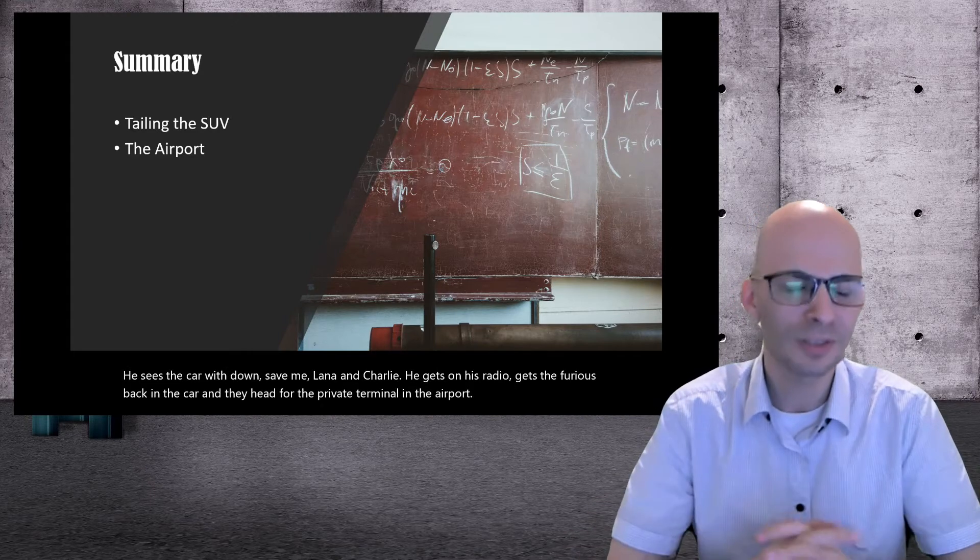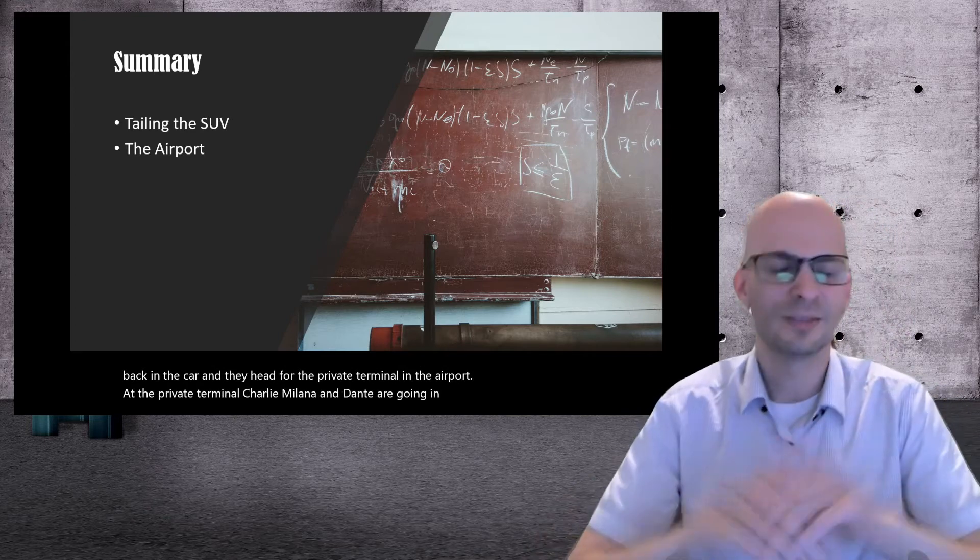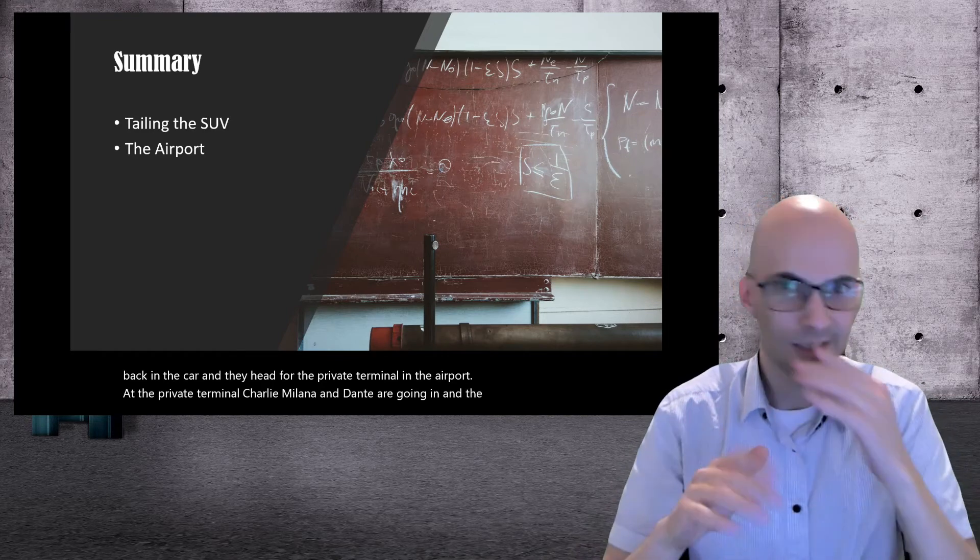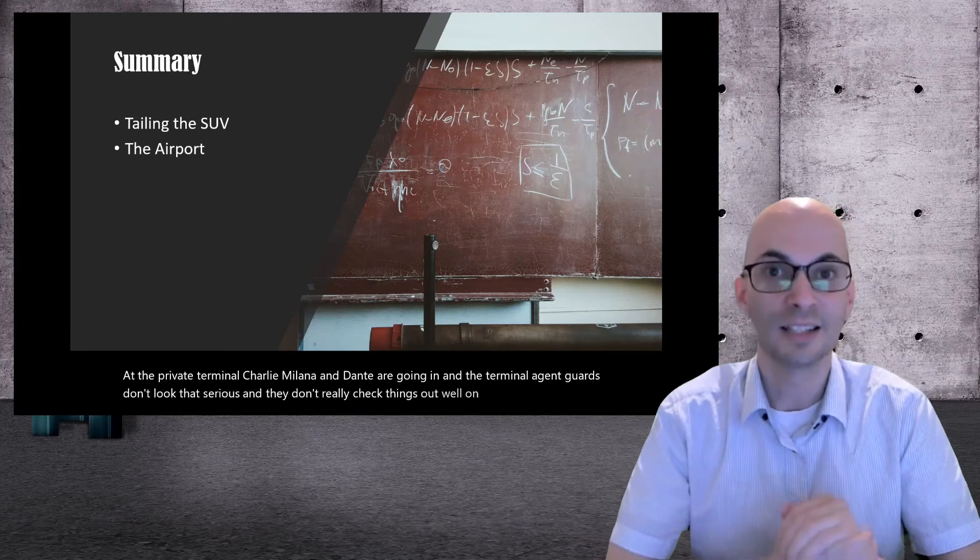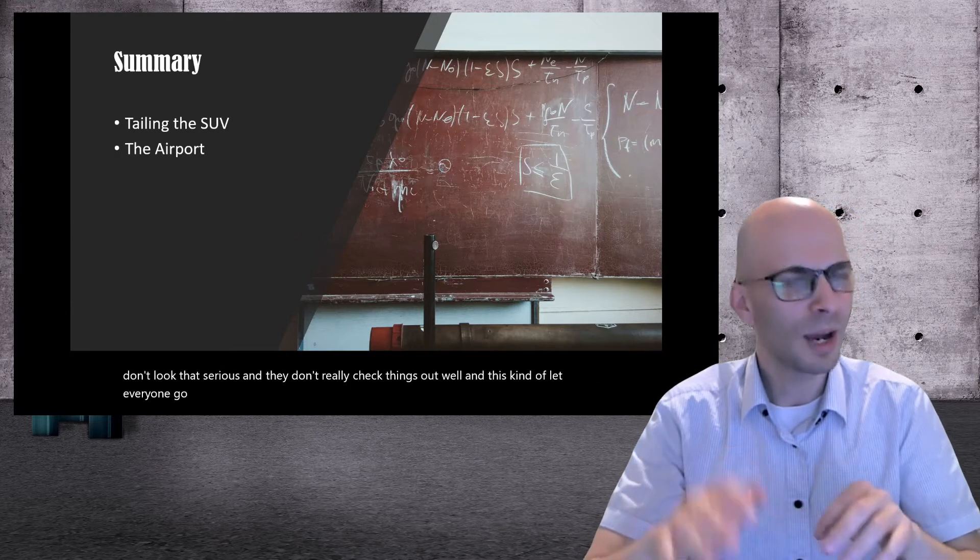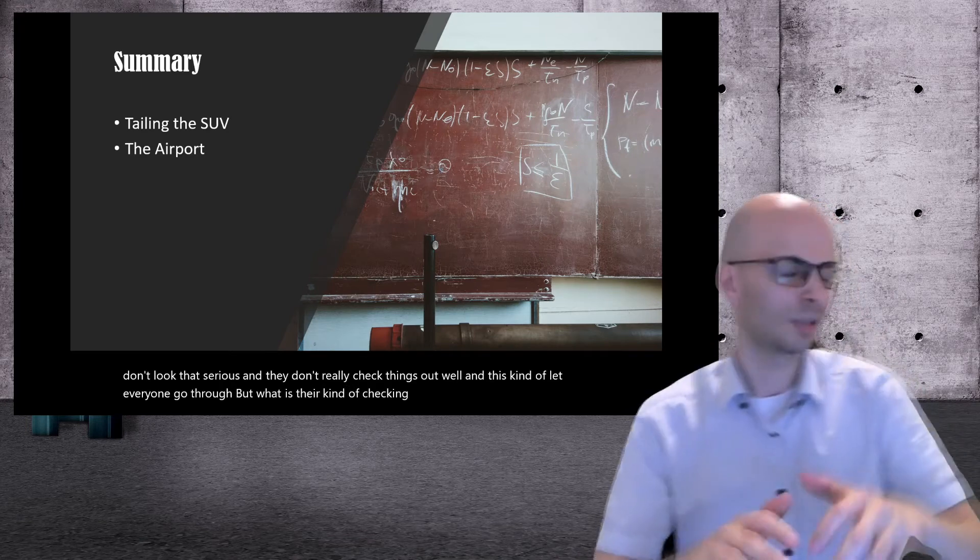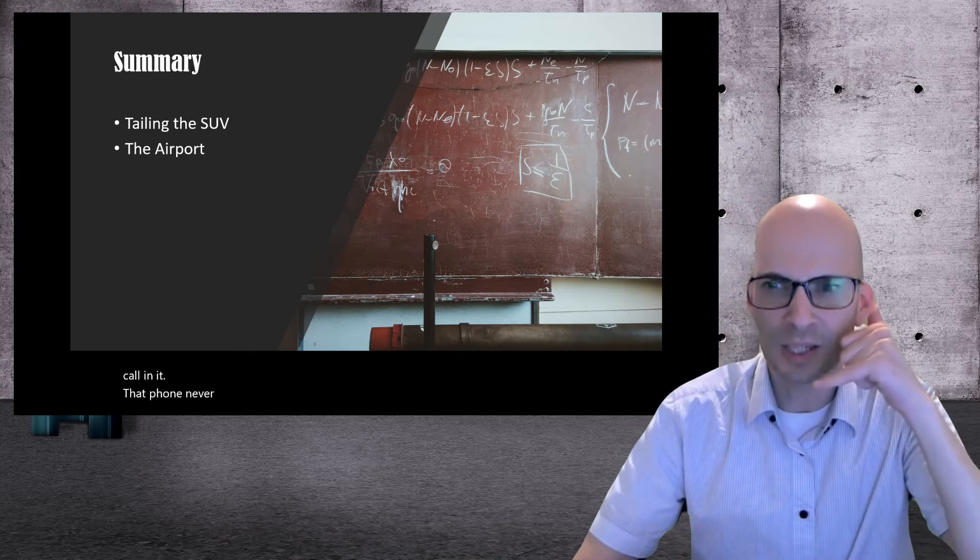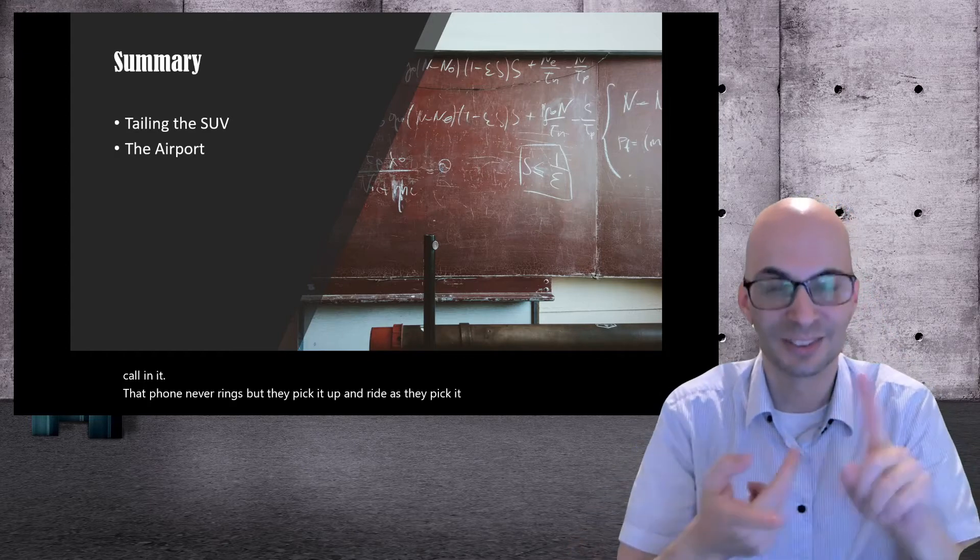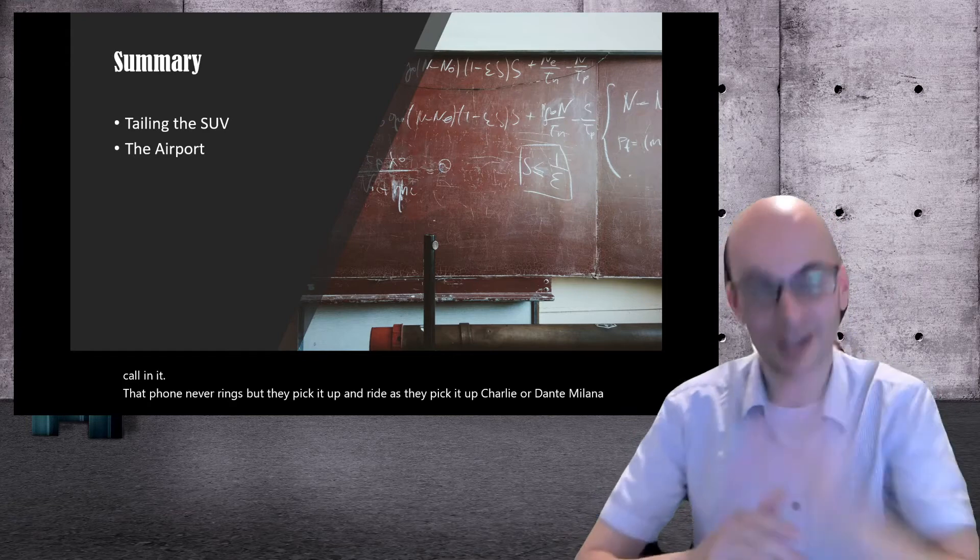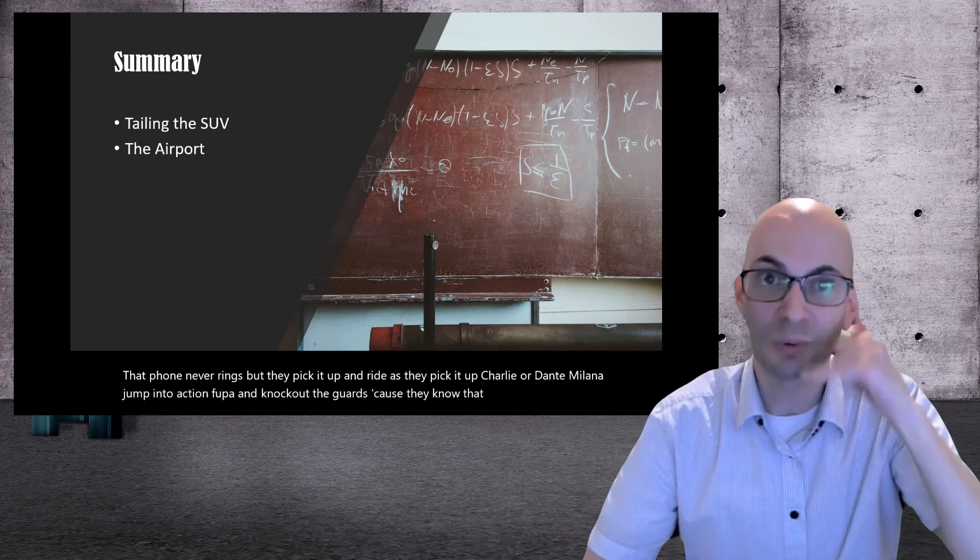At the private terminal, Charlie and Milana and Dante are going in. The terminal agent guards don't look that serious. They don't really check things that well, and they just kind of let everyone go through. But right as they're checking all the documents, they get a phone call. They're like, oh, that phone never rings. But they pick it up. And right as they pick it up, Dante and Milana jump into action and knock out the guards because they know that phone call is saying don't let anyone leave.